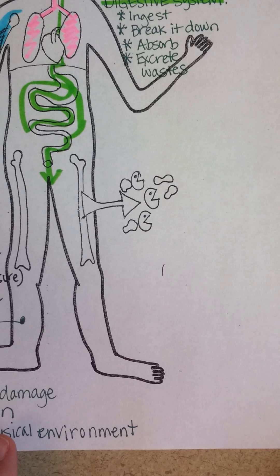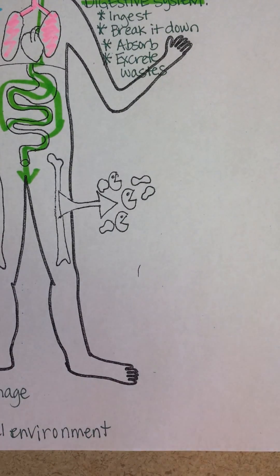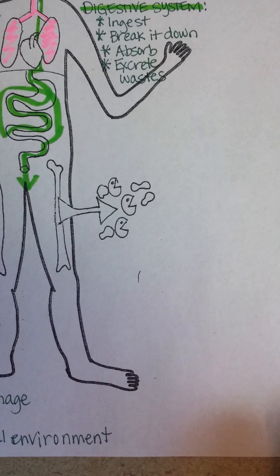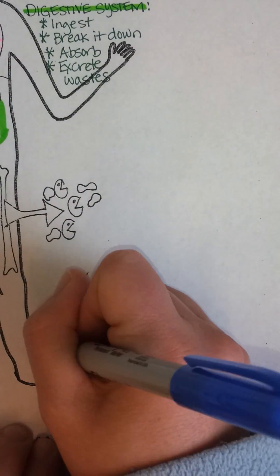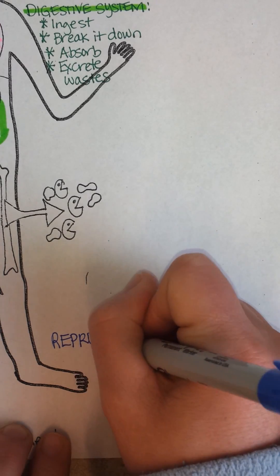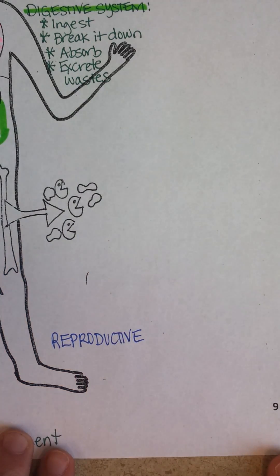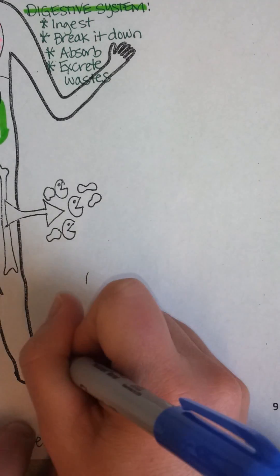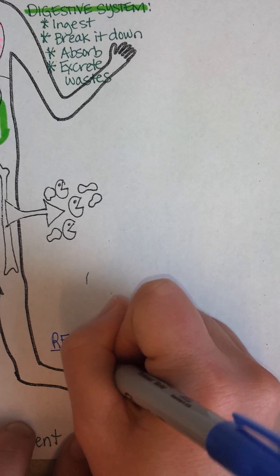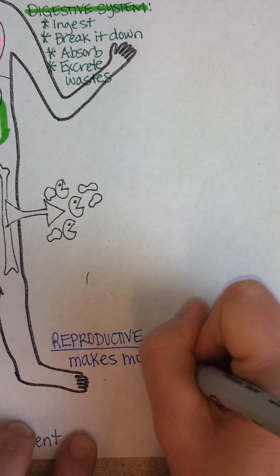Although my model doesn't have the reproductive system on it, we can still add it here. In a female, that would be the ovaries and the uterus; in a male, it would be the testes. It has a pretty straightforward function — although it's complicated how it ends up working — but it makes more humans.